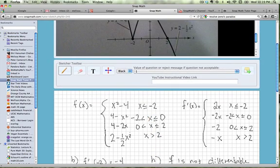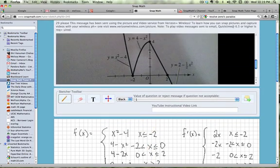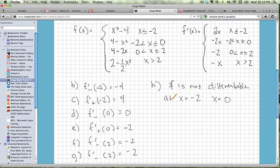Which should make sense when we look at the picture because we have points at negative 2 and 0, and those are always places of non-differentiability.